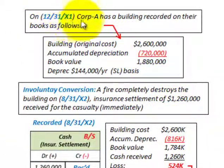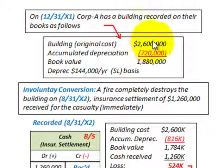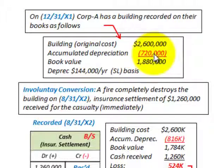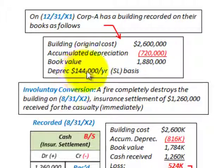On 12/31/X1, Corporation A has a building recorded on the books as follows: the original cost was $2,600,000, accumulated depreciation was $720,000, so the book value is $1,880,000. The building was depreciated at $144,000 per year on a straight-line basis.